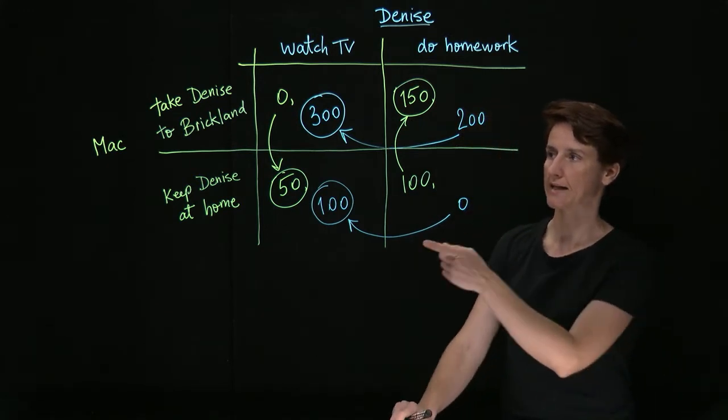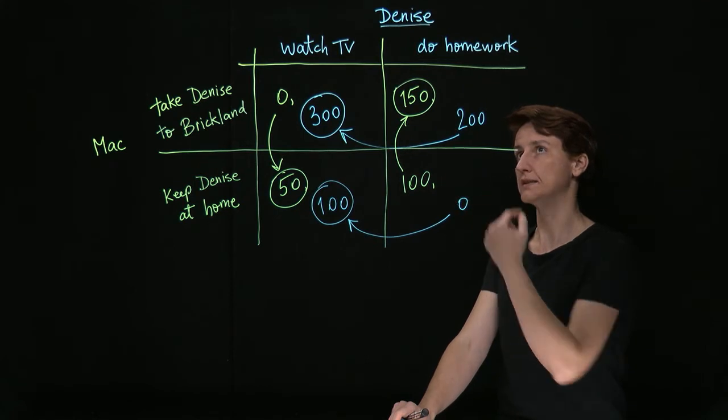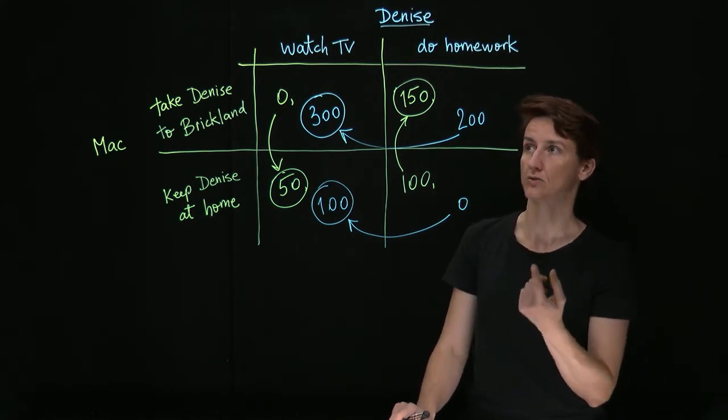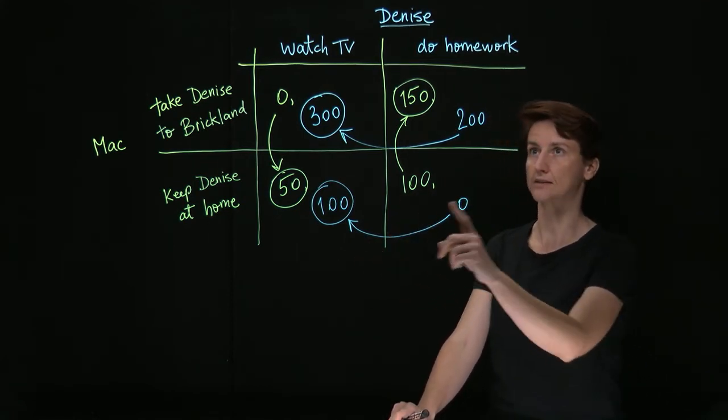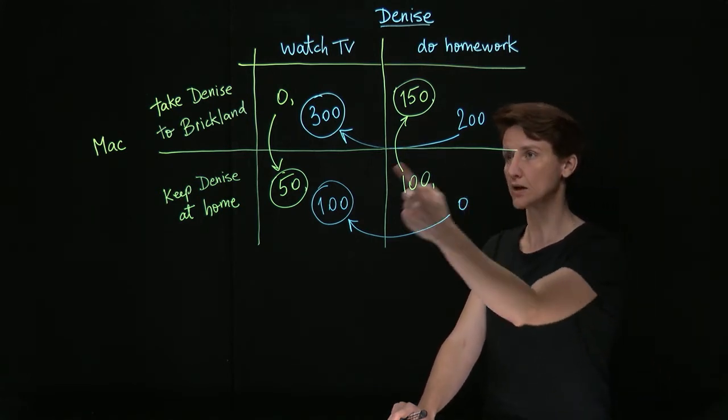So you could see that Mac does not have a dominant strategy. However, Denise does. Her dominant strategy is to watch TV and her dominated strategy is to do homework.